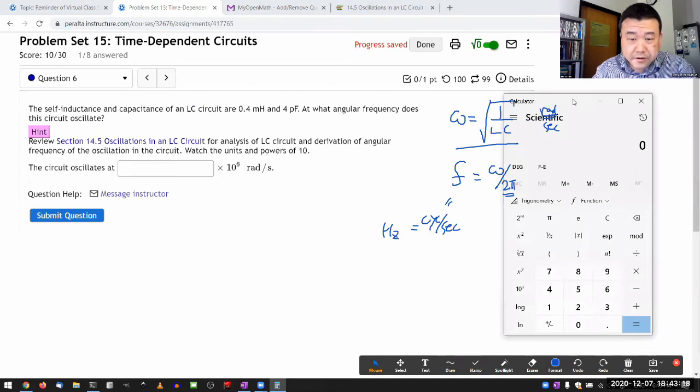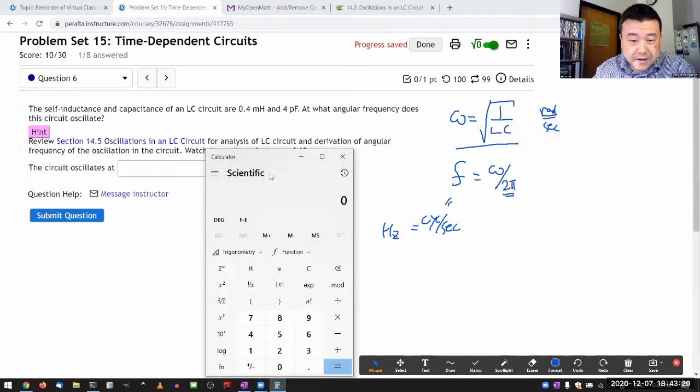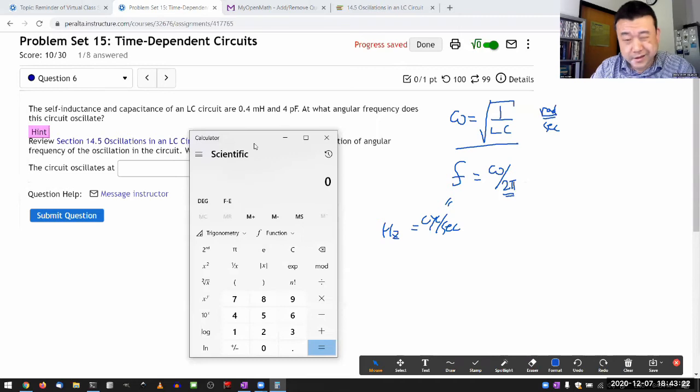I'm given the inductance and the capacitance. Let me plug in the powers of 10 so I don't have to do a lot of thinking. So 0.4 mH times 4 picofarad.